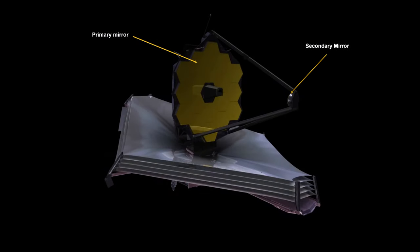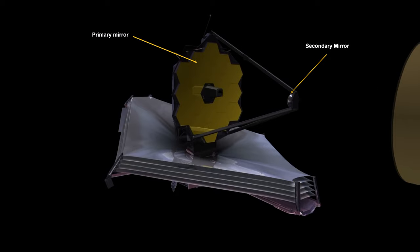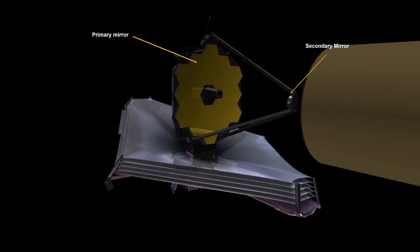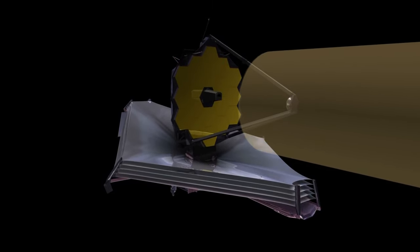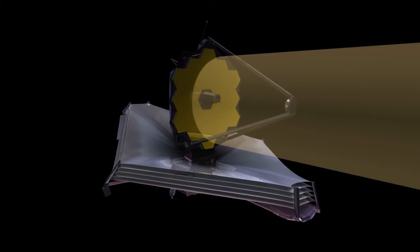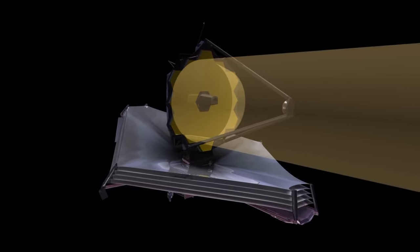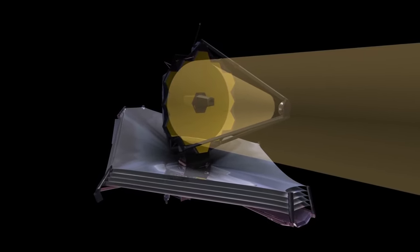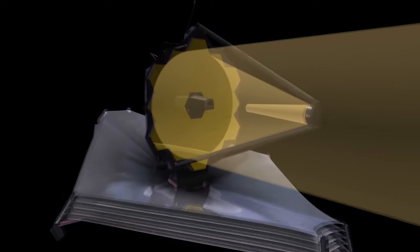Here are Webb's primary and secondary mirrors. The primary is the size of a tennis court. This animation shows the light path through the telescope. The light reflects off the primary and is focused onto the secondary, where it is beamed into the camera.